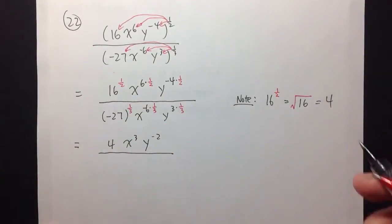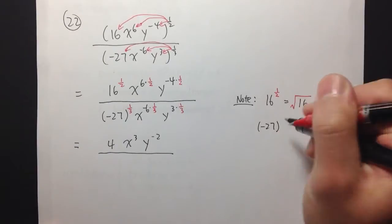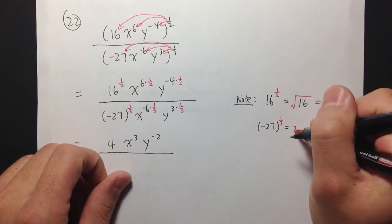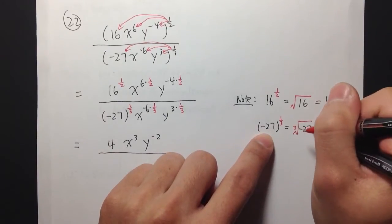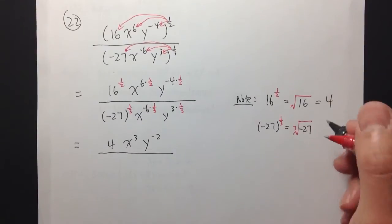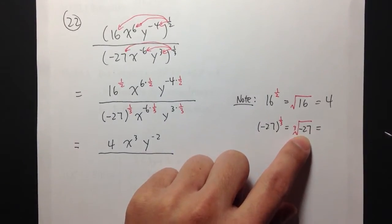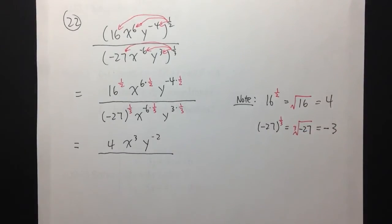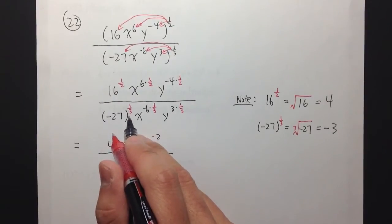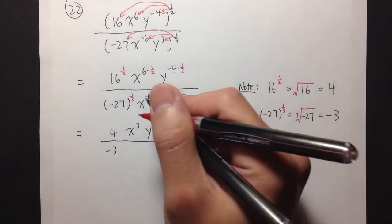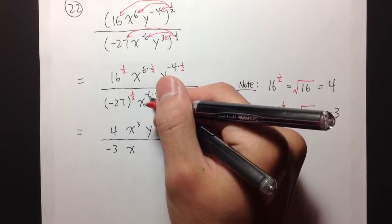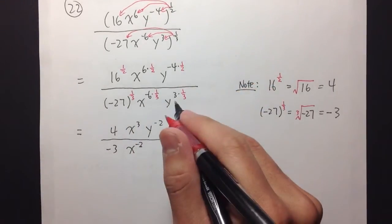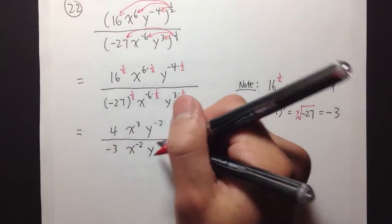Over — let's look at the bottom one. Negative 27 in parentheses raised to the 1 third power. The 1 third power means we are going to take the cube root of negative 27. We can have negative numbers inside of the cube root. The cube root of 27 is 3, because 3 times 3 times 3 is 27, so we get a negative 3. So we have negative 3 on the denominator. And then x: negative 6 times 1 third is negative 2. And then for y: 3 times 1 third is just 1.